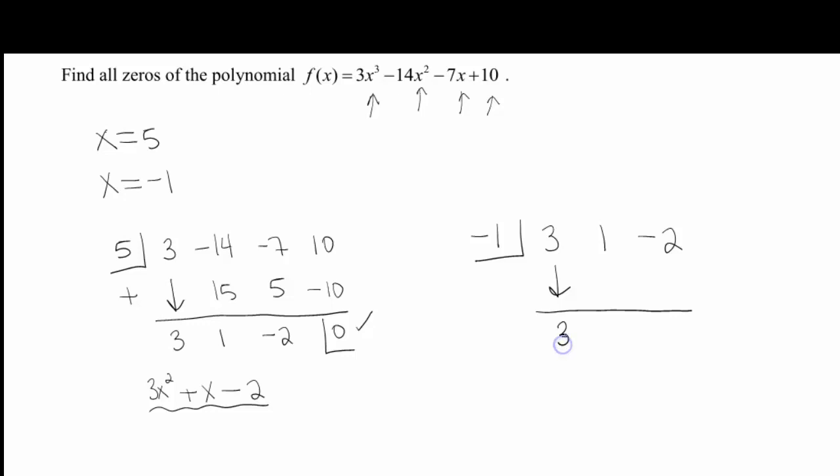We're going to bring our 3 down. Now let's multiply. 3 by negative 1 is negative 3. And then we're going to add 1 plus negative 3 is negative 2. Multiply negative 2 by negative 1. We get a positive 2. Remainder of 0. So that means that my last factor here is 3x minus 2.